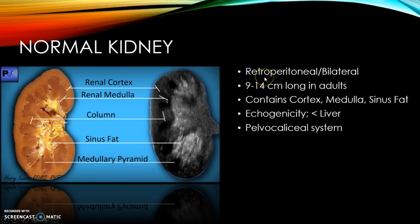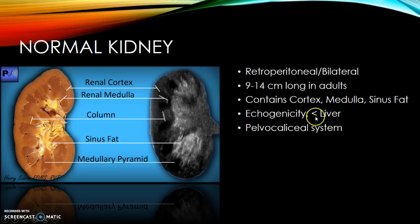Normal kidneys are bilateral retroperitoneal organs. The right is located under the liver and the left under the spleen. Normal size is usually 9 to 14 centimeters in adults — about 9 to 12 in females and 10 to 14 in males. Echogenicity is less than the liver and less than the spleen. The kidney also contains the pelvicalyceal system where urine collects and drains into the ureter.